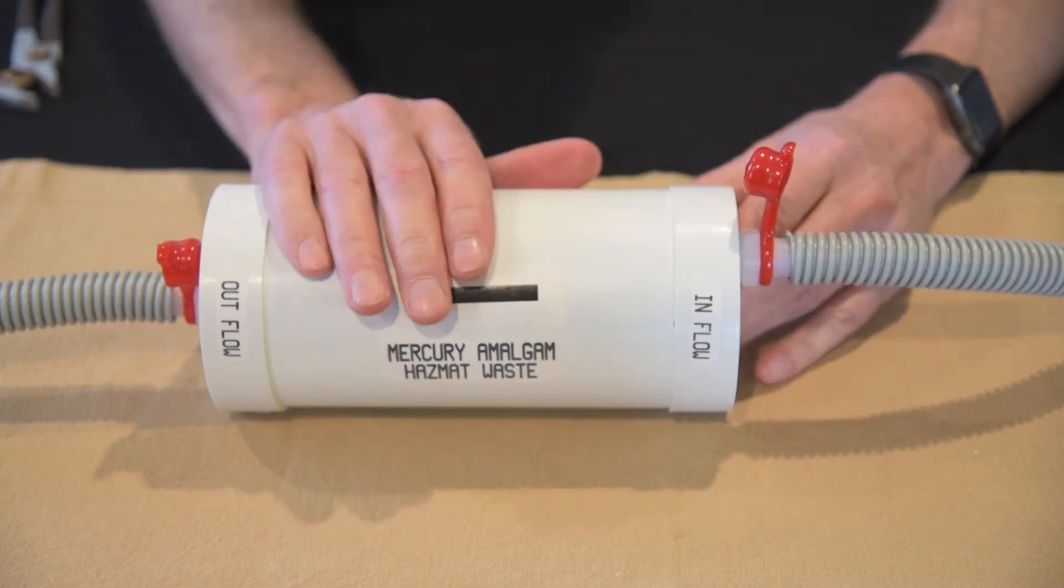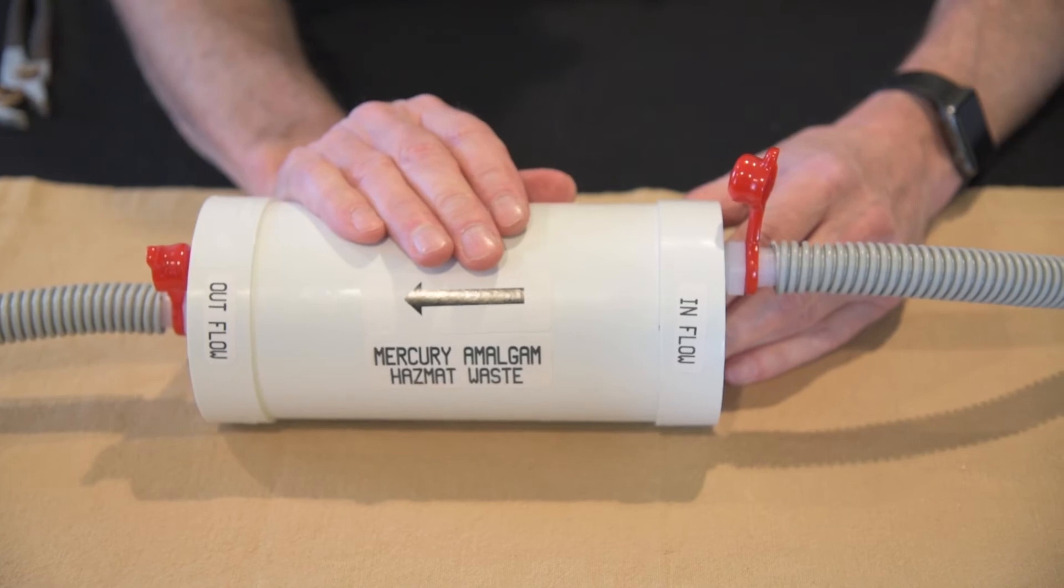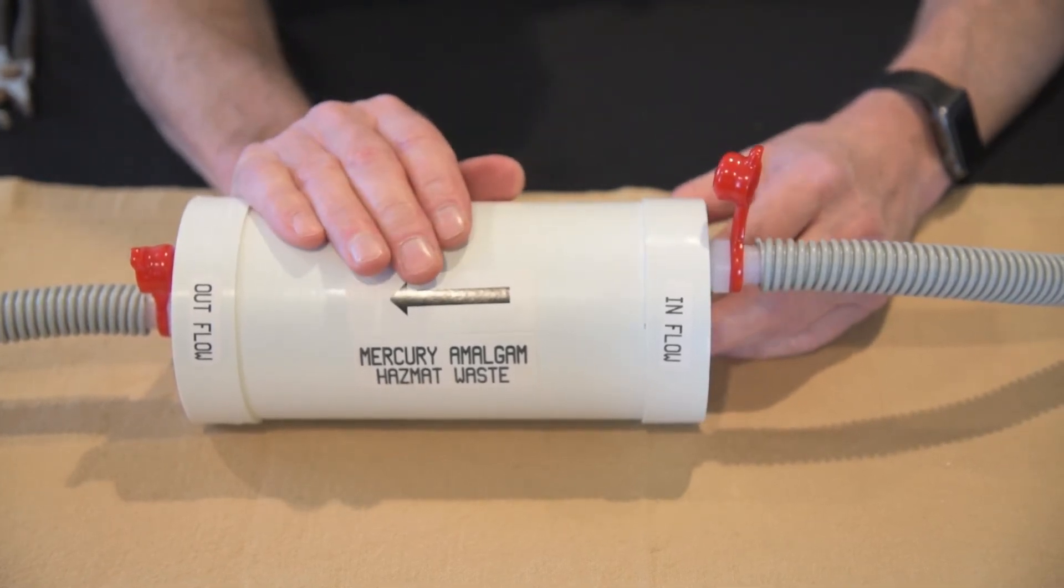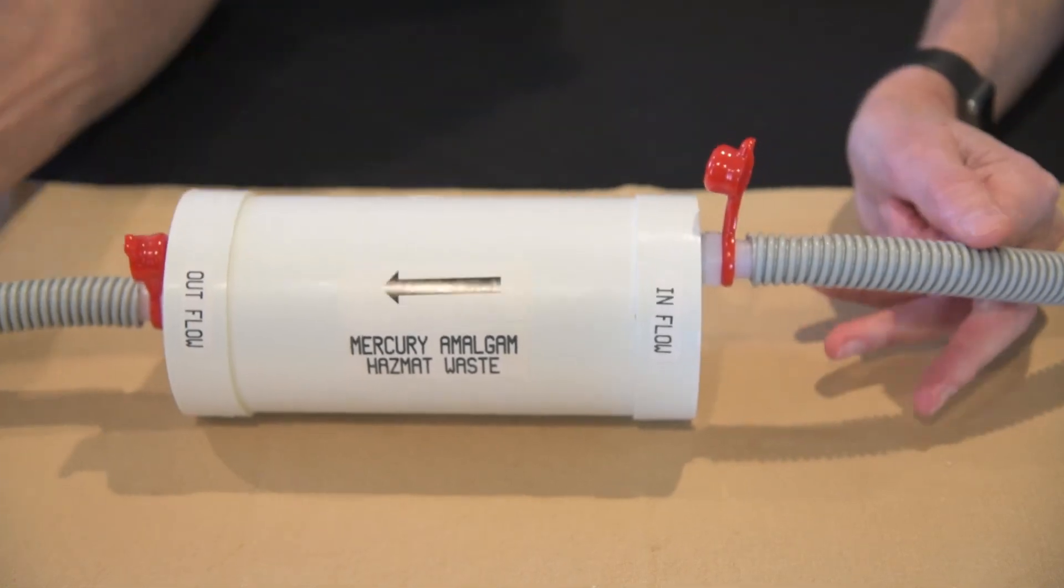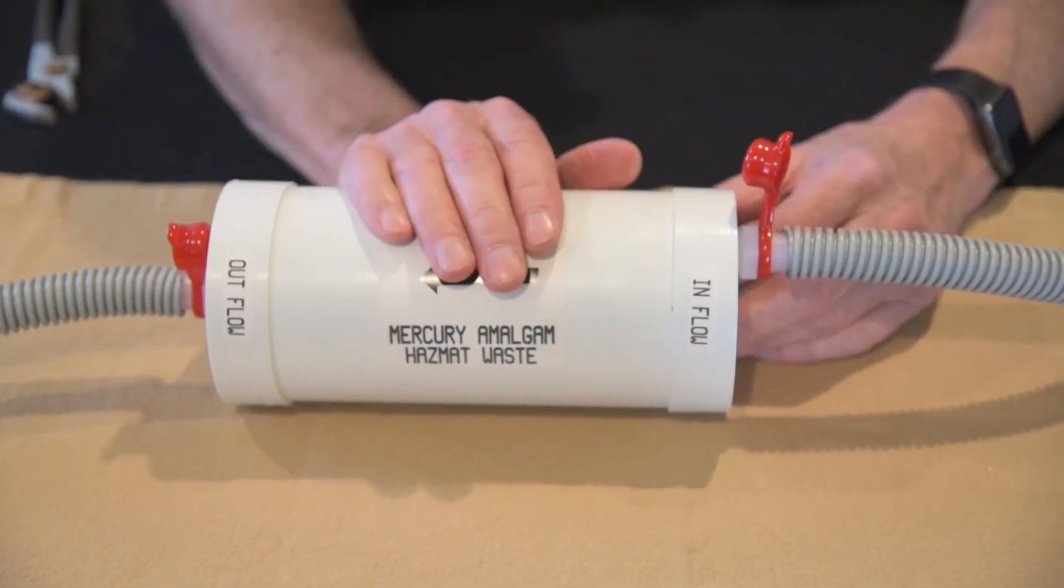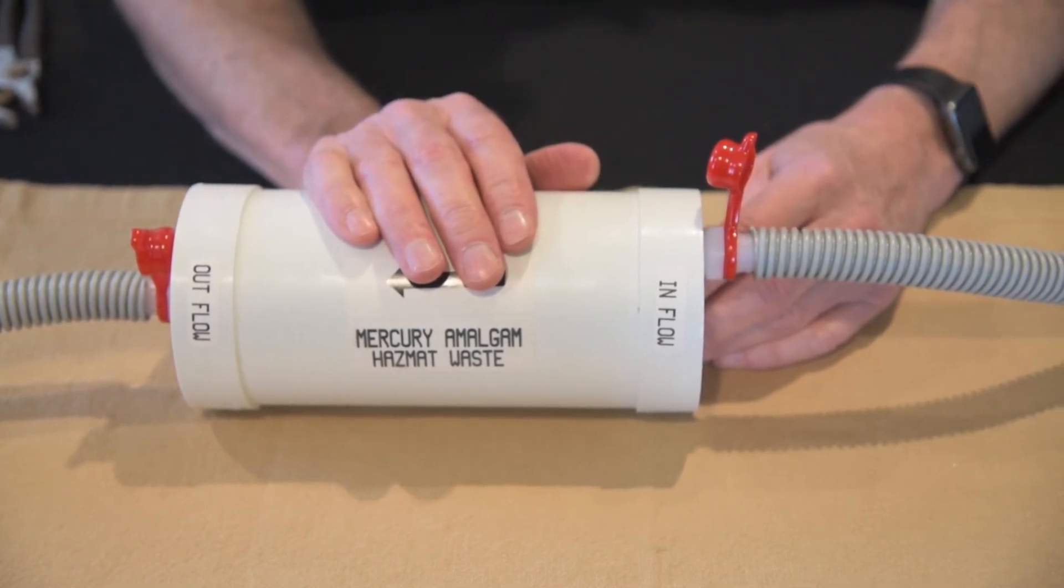Now if you notice that after six months or so, maybe you'll notice a decrease in your vacuum power. What should you check? Well, first of all, you want to check to make sure all your tubing is not clogged. Mine certainly gets clogged here. And that's an easy fix.